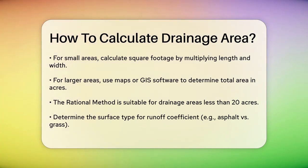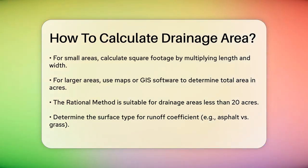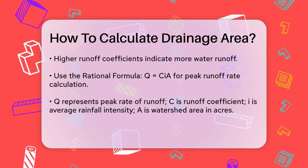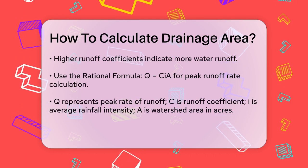Next, you need to determine the surface type of the area. Different surfaces have different runoff coefficients, which are essential for calculating the peak runoff rate. For example, asphalt has a higher runoff coefficient than grass because it allows more water to run off rather than soak into the ground.